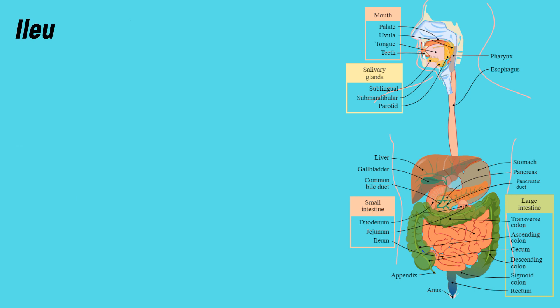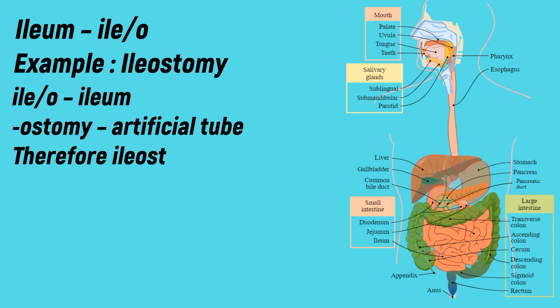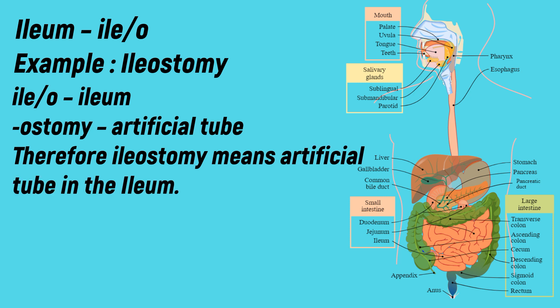Ileum: the medical term for ileum is 'ileo'. Example: ileostomy. -Ostomy means artificial tube. Therefore, ileostomy means an artificial tube in the ileum.